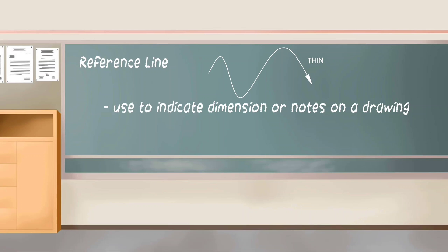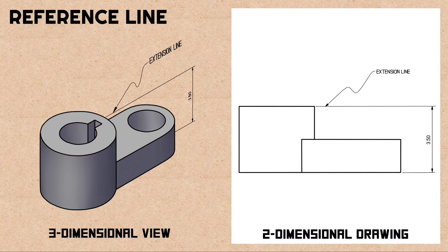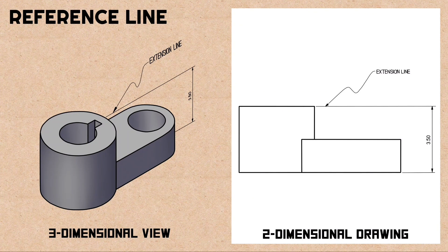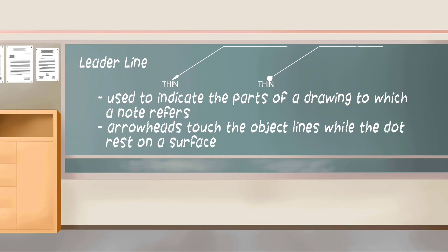Reference line. It is a thin line used to indicate the parts of a drawing to which a note refers. Arrowheads touch the object lines while the dot rests on a surface.